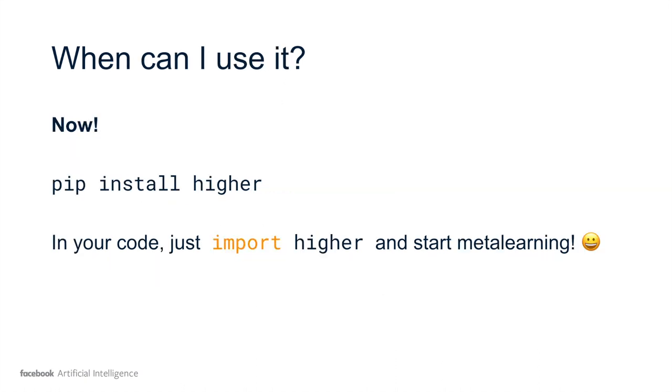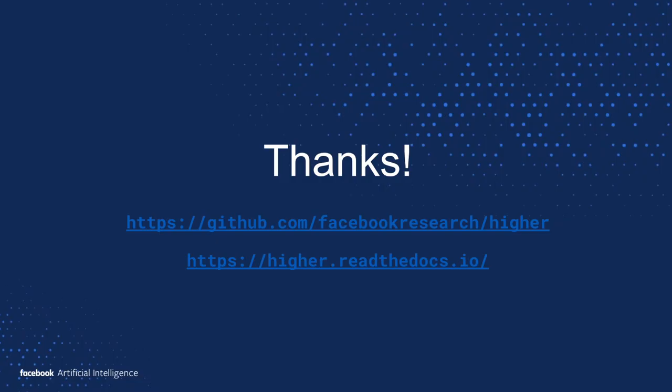So you can use it now. It's pip installable because it's on PyPI. Just pip install higher, and in your code import higher and start meta-learning with very little overhead. If you want to learn more, you can look at the actual implementation on GitHub, and we have some docs in fairly basic state on Read the Docs, which are going to be expanded upon in the coming months as time permits. Thank you for listening, and if you have any questions, I'm sure Brandon will be happy to take them.